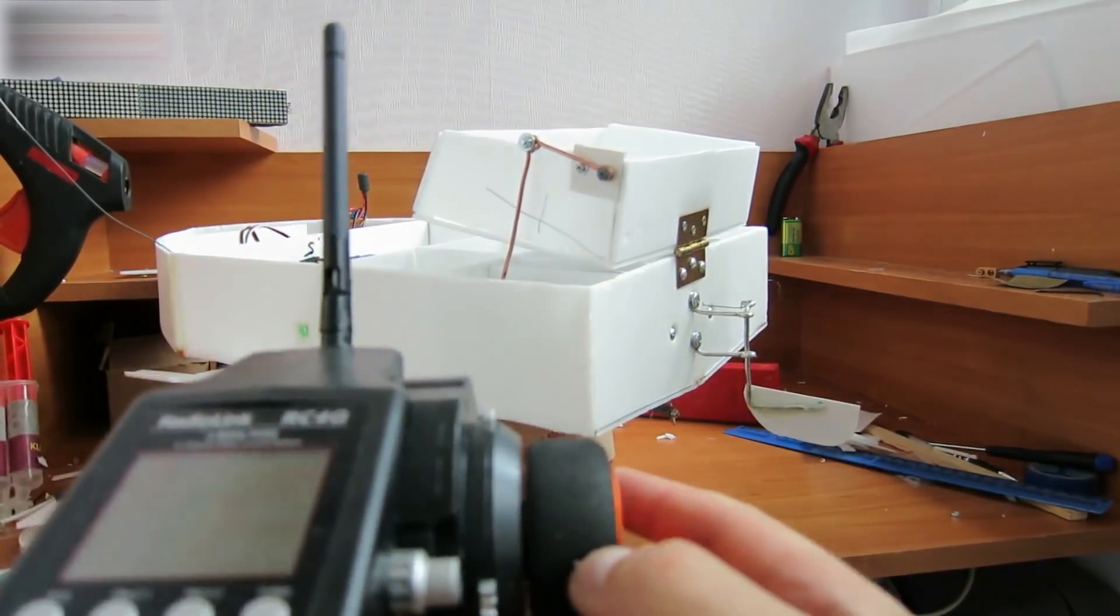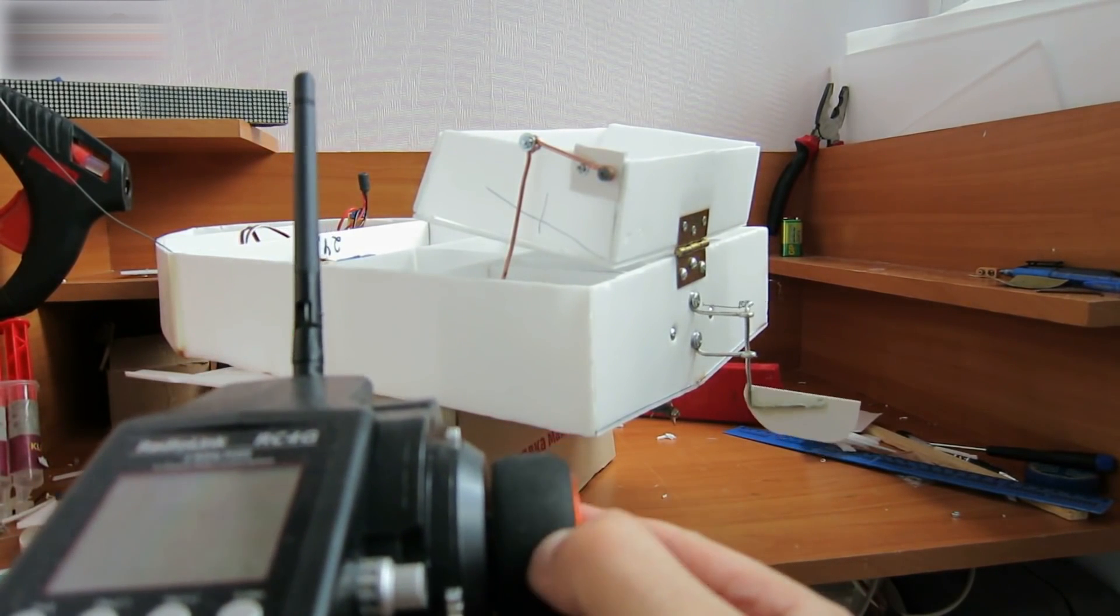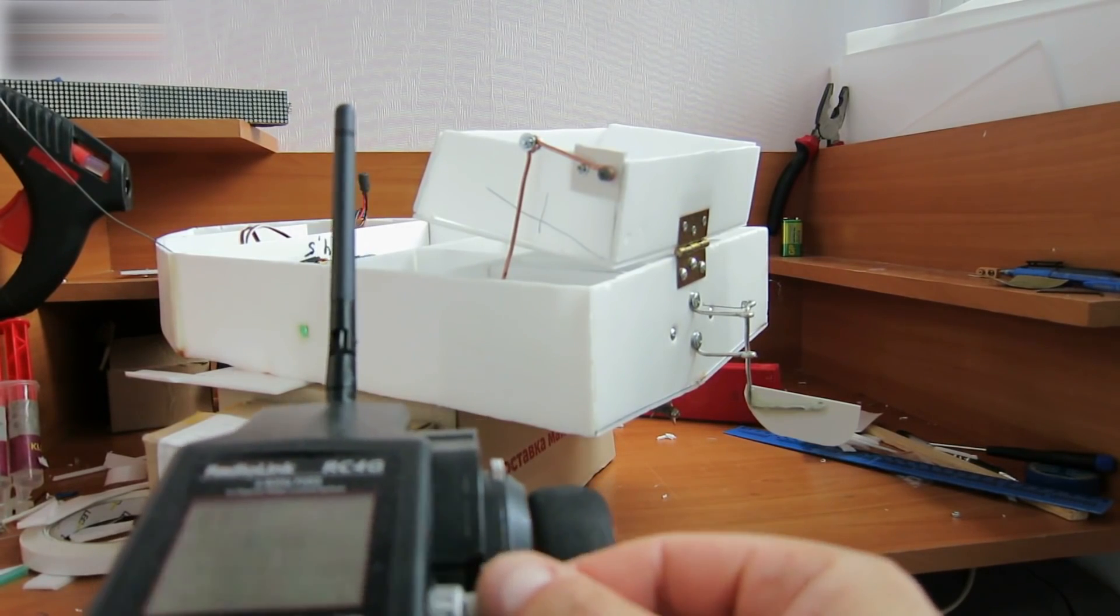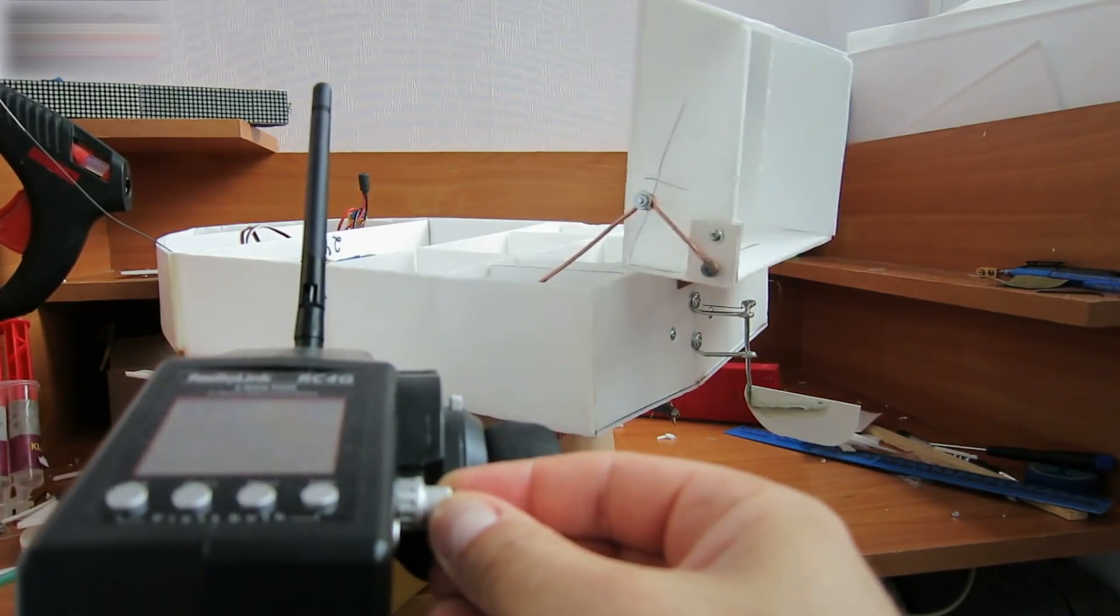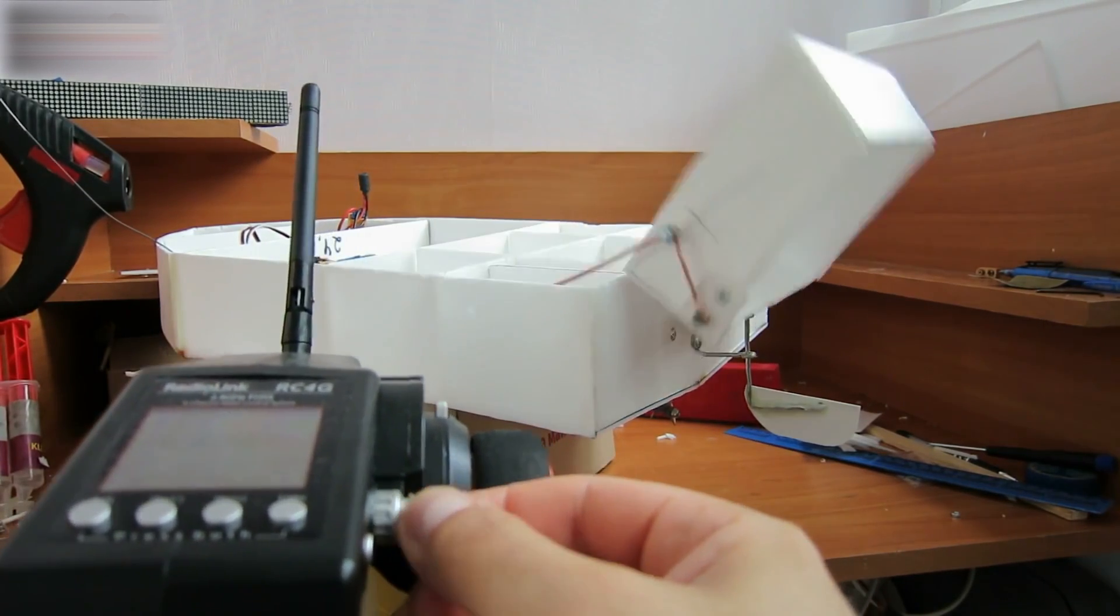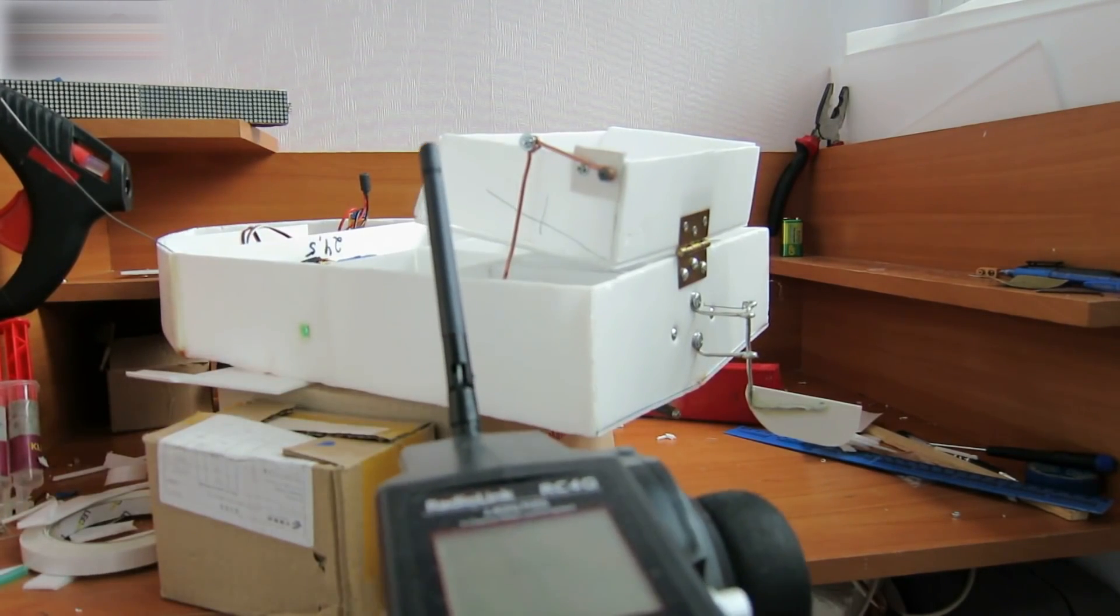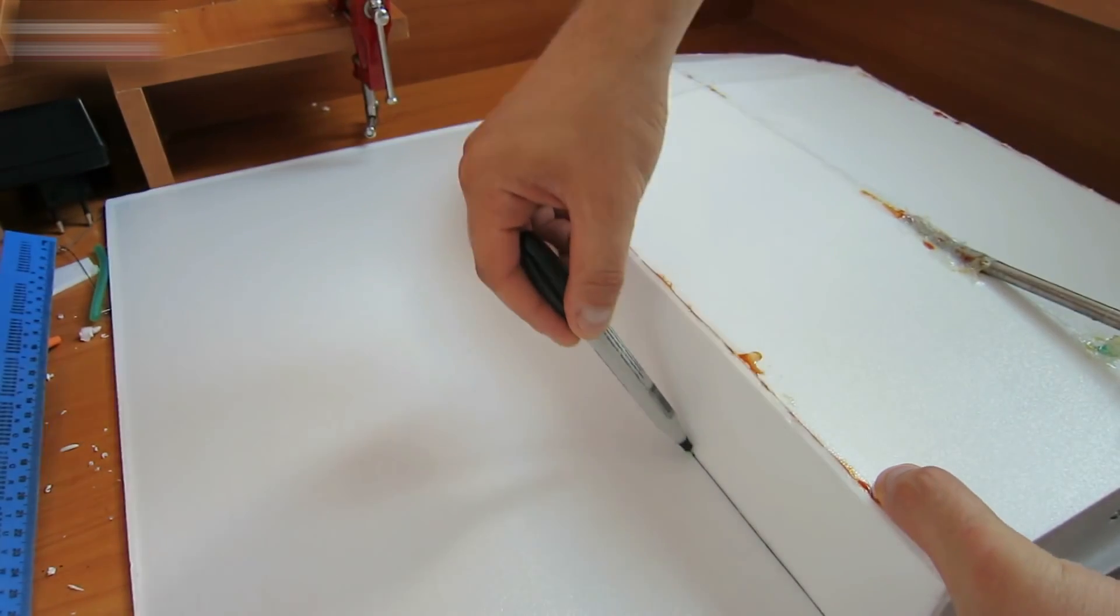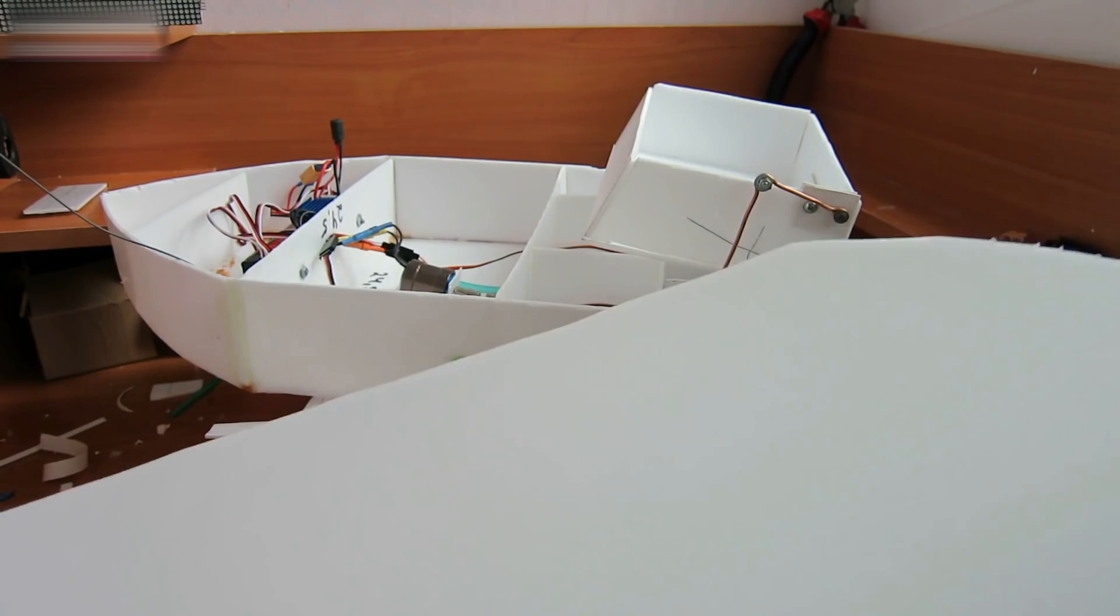Using the remote, you can check the rotation. It's fine. And now let's check the bait unloading. The regulator is in control. Check the speed. Okay.